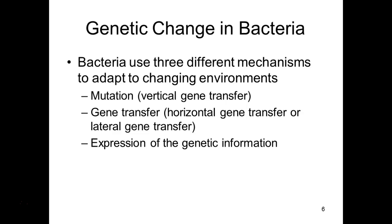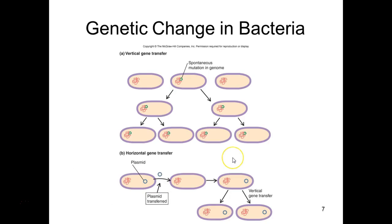This is vertical gene transfer. Next time we'll look at horizontal, where it can go from cousin to cousin. So vertically: a mutation happens, it doesn't get fixed, and she passes it on to all her babies. Horizontally, some genetic information can move, and there are three different ways we're going to talk about how this can happen.